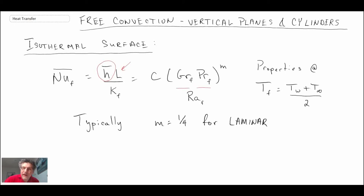Typically m will be one quarter for laminar boundary layers on our heated vertical surface. For free convection, if the boundary layer is laminar, m would be one quarter. We determine whether we had laminar or turbulent depending upon the Rayleigh number or the Grashof times the Prandtl number. If it's less than 10 to the 9, that is what we said would be a laminar boundary layer.